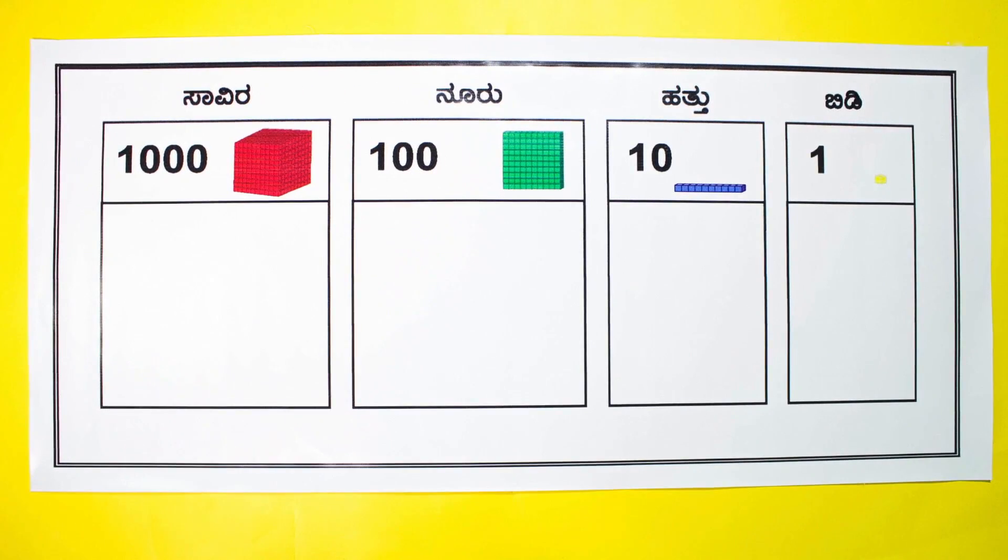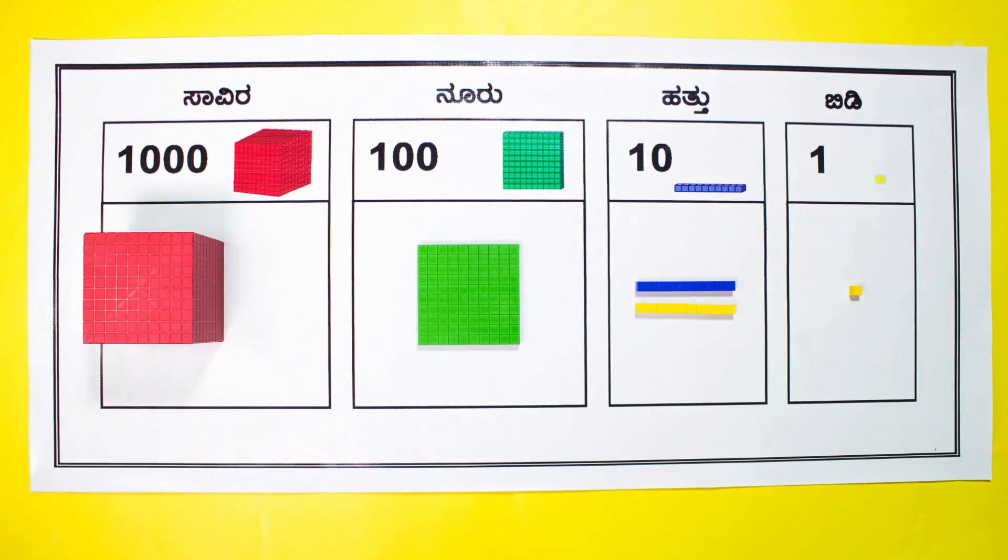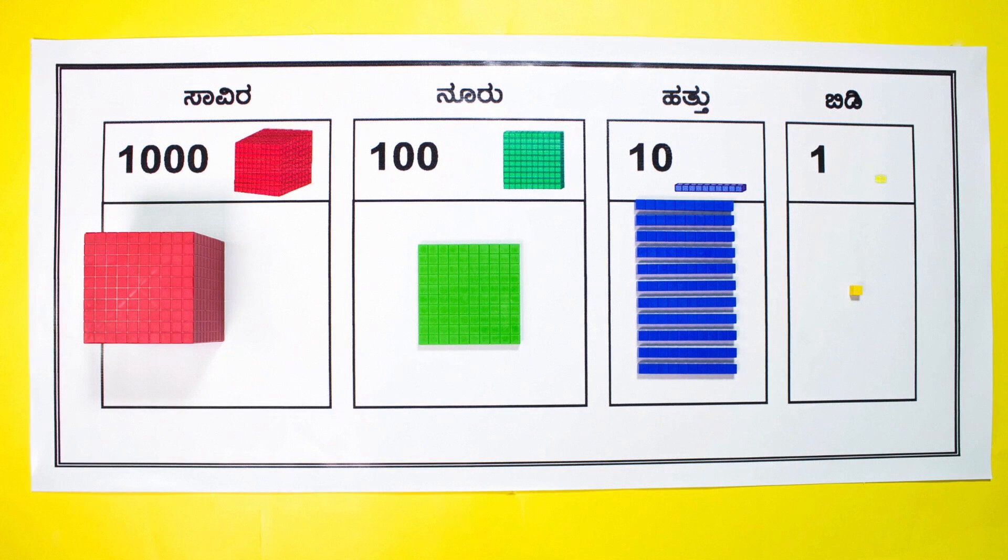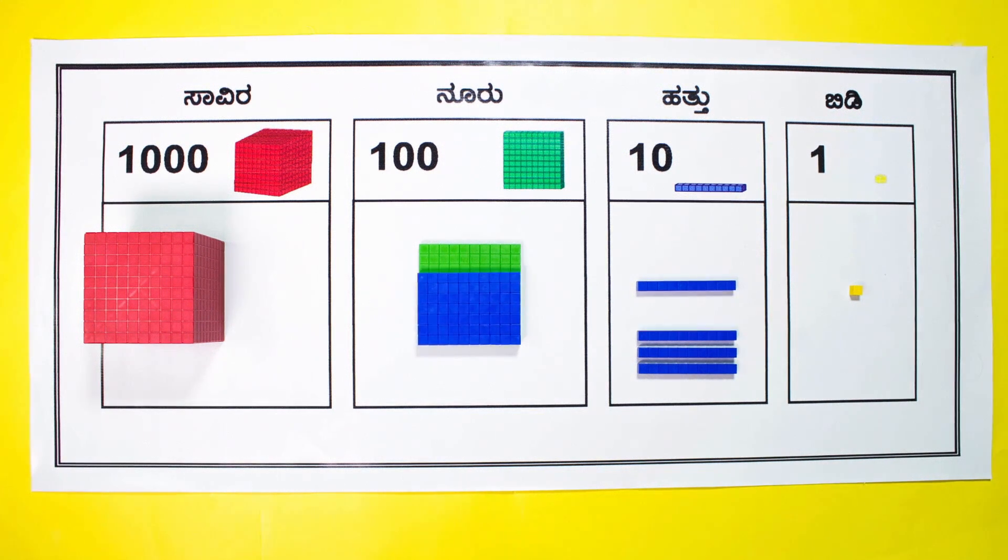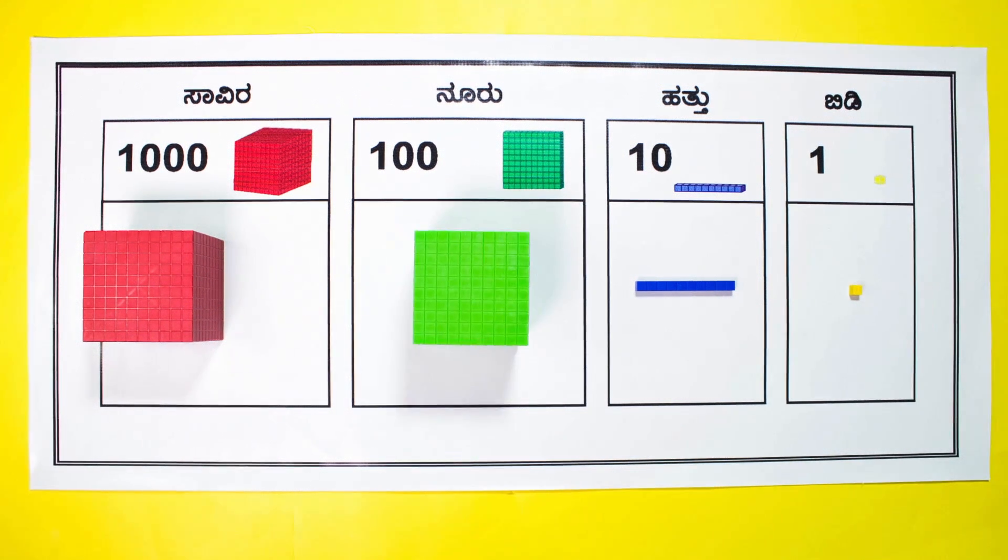Revise the rule of grouping by tens using the place value mat and base 10 blocks. Each yellow cube represents one unit. Once we have 10 units, move one step left to the tens place and replace these 10 units with one rod of 10.